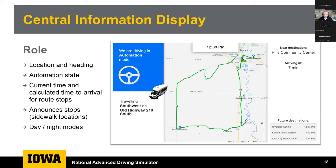The central information display also announces stops with an audio cue — not only announcing the stop but also announcing where the sidewalk is relative to where the vehicle is parked. This came up during initial planning with a local transit operator: visually impaired passengers may not know where the sidewalk is in relation to the vehicle. Even though nobody is getting on or off at each stop in this project, it was still taken seriously and built into the design.